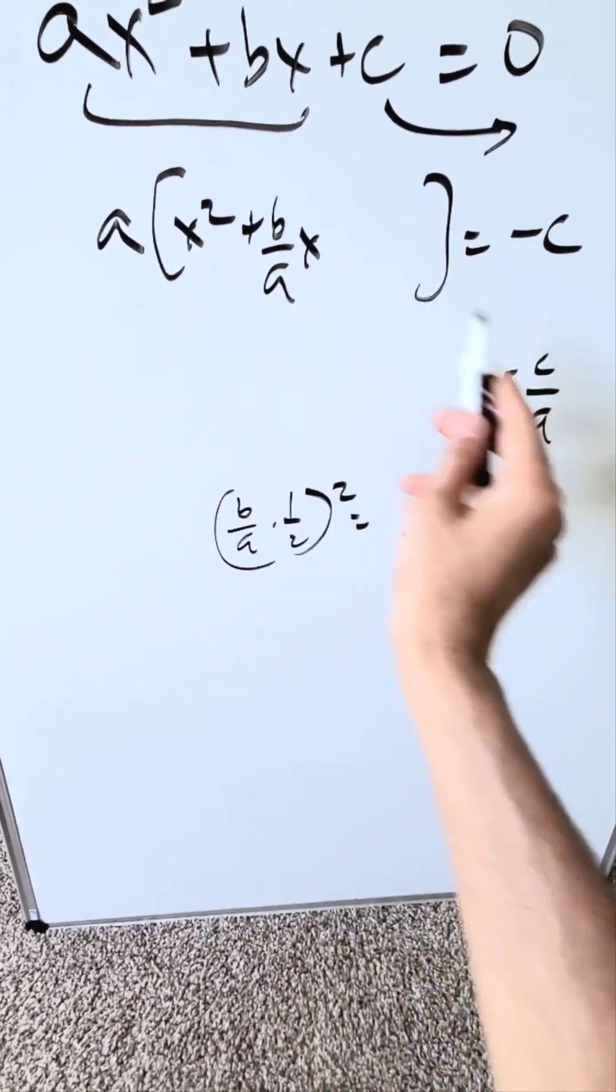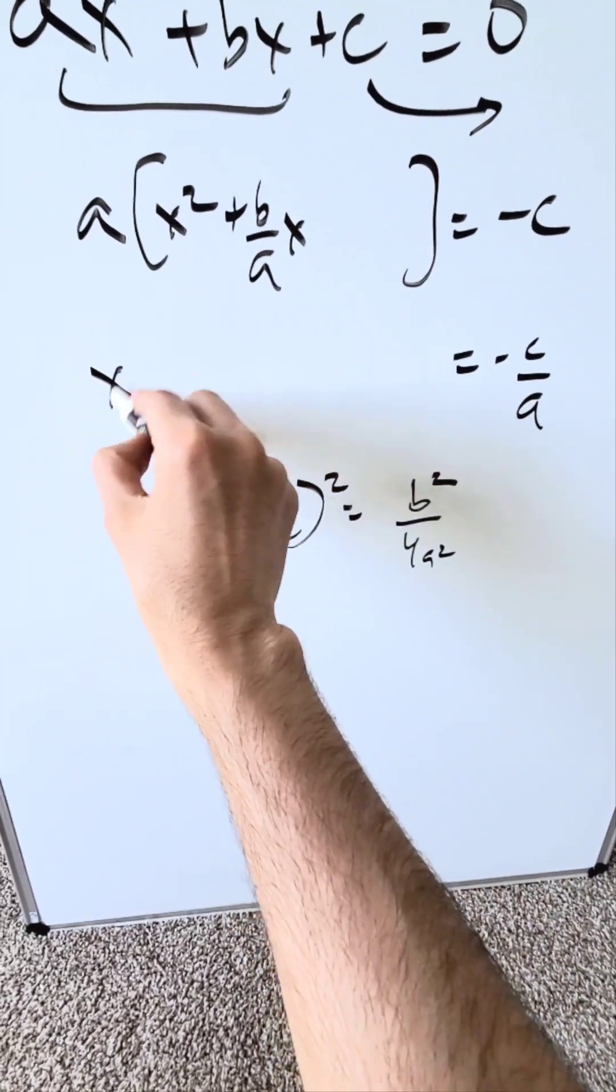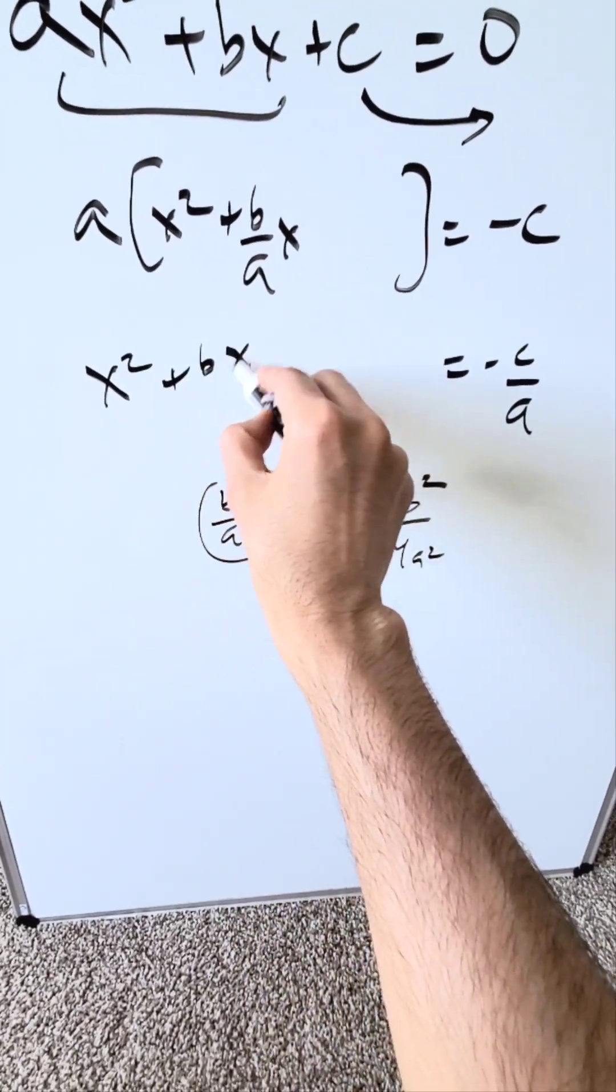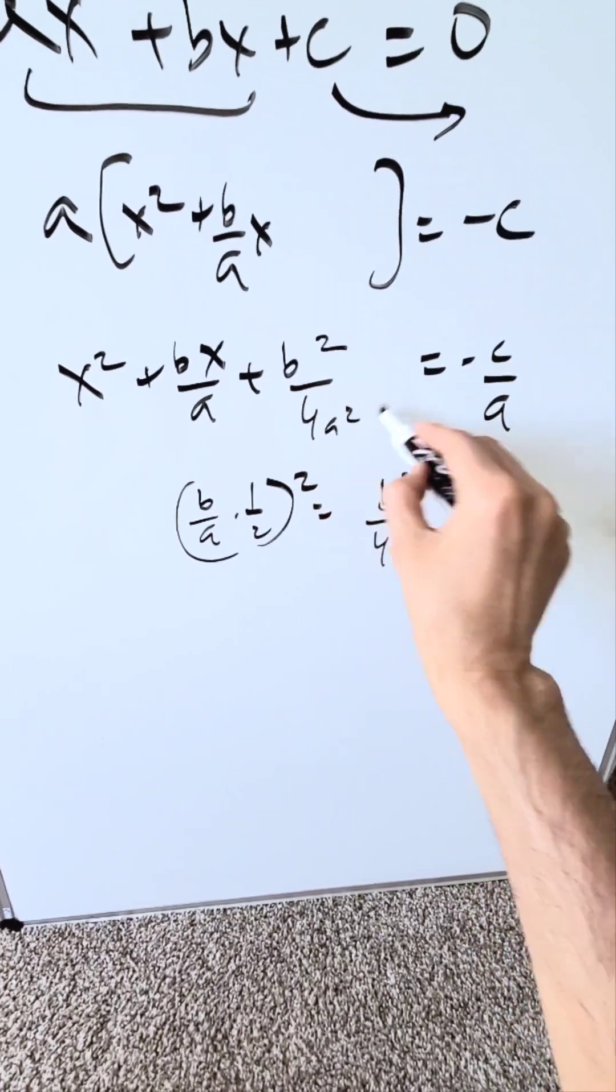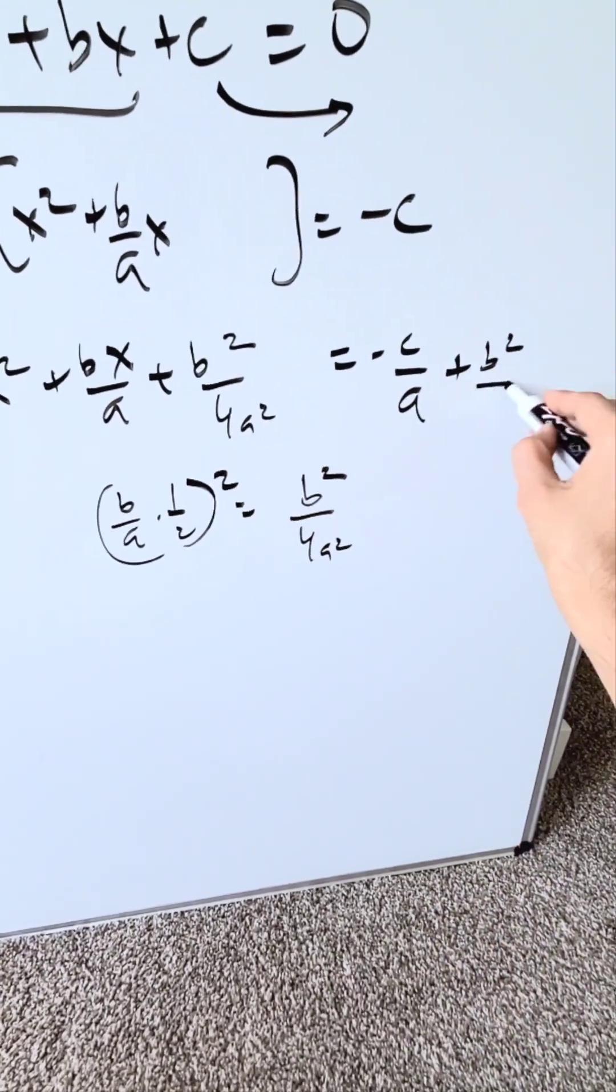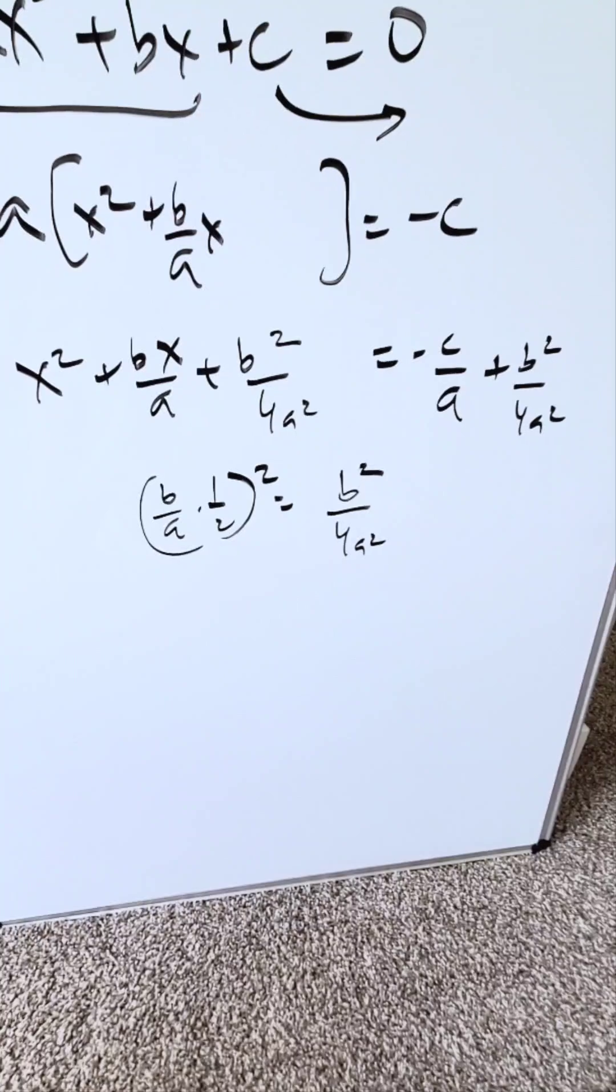You'll add it on this side and on this side. Now when you do it, keep in mind the a has been pushed over here. You don't have to worry about it. You have x squared plus bx over a plus b squared over 4a squared. You add it on both sides to maintain balance.